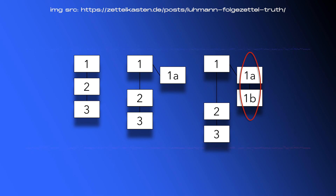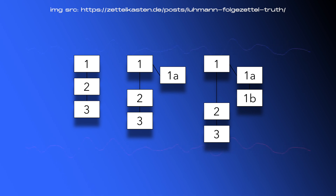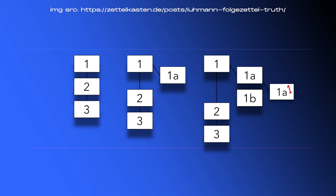Luhmann did this all the time, and in fact his ID system heavily reflected that. In the case just described, Luhmann would use the ID system you see in the third column. If a note had an ID of 1, the new branch would have the ID of 1A. If another branch branched off of that, we would have 1A1, and so on. Nowadays many people use the date and time as the ID, because of the affordances that digital tools give us in searching, linking, and retrieving notes. But Luhmann did in fact use this hierarchical ID system.